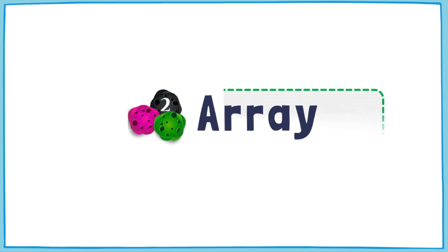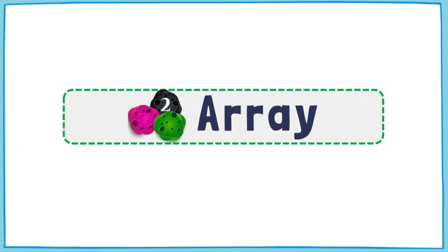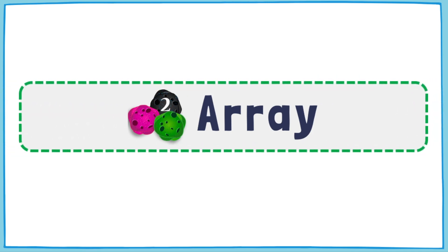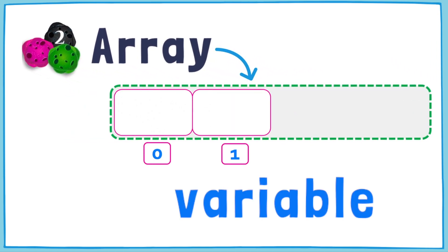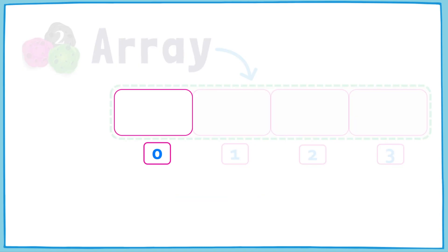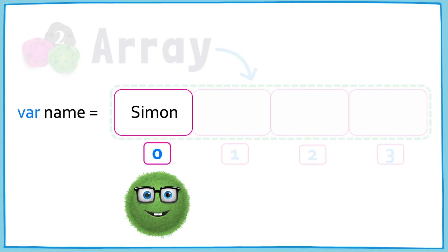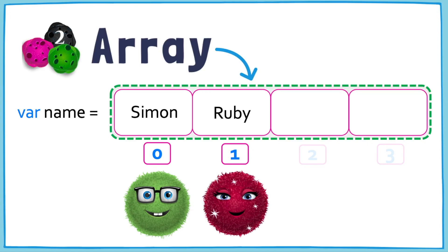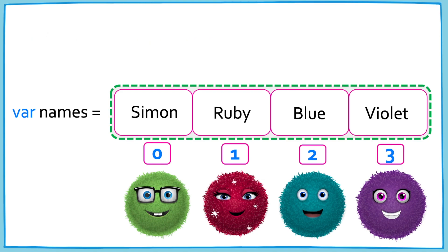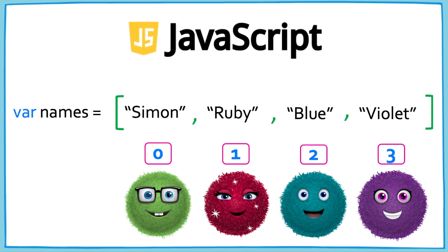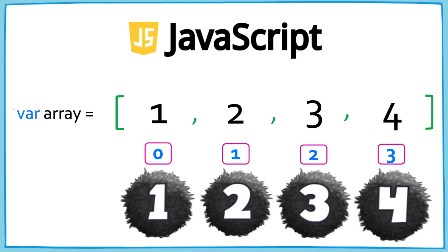An array is like a container that keeps similar things together in a single ordered list. The container can grow or shrink to fit the number of items inside. In other words, it's just a variable that can store multiple values. Just like you can assign a single value to a variable, you can store an entire array of values in a variable too. This list is only four items long, but in code it could be hundreds or thousands of values. In JavaScript, an array looks like this — values separated by commas and stored in brackets. These are all strings, but an array can also store integers or both.